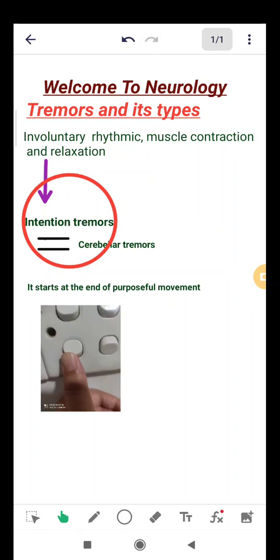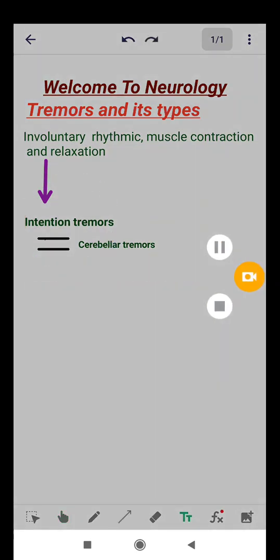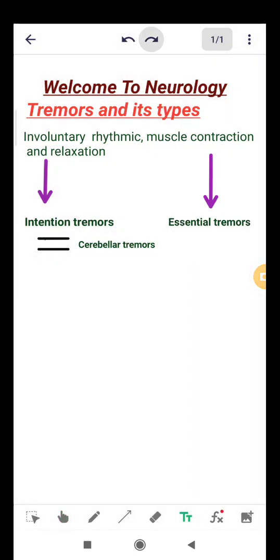Now let's discuss the second type of tremor. Essential tremors. Essential tremors' main feature is the cause is unknown. It is usually symmetrical, meaning involving the same side of the body.